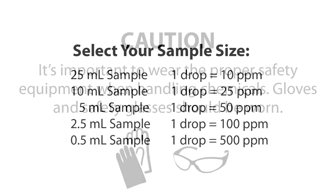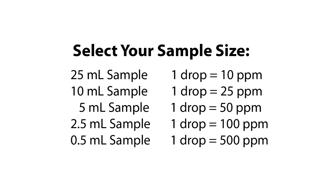The first step according to the Endpoint ID procedure is to select the appropriate sample size. You want to select a sample size that matches the equivalency you would like to use. In this example, we are going to use a 25 ml sample. Therefore, our equivalency is 1 drop equals 10 parts per million as Chloride.